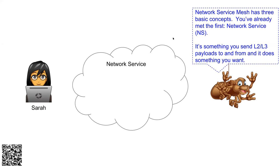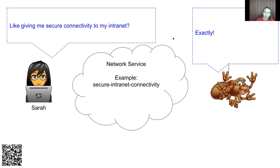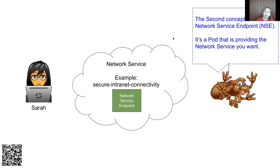One thing NSM enables is using SRv6 as just another tunneling option between Sarah's pod and the network service endpoint. There are mechanisms in NSM that allow you to insert a proxy that can sniff and augment the SID stack going back and forth. Effectively, we have no problem with the network doing work — it's just a sliding scale. The second concept is the Network Service Endpoint: a pod that provides the network service you want. It doesn't necessarily have to be a pod — it could be something in your physical network.